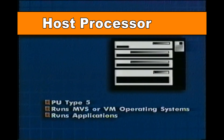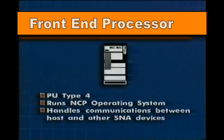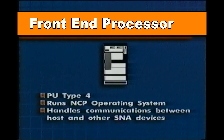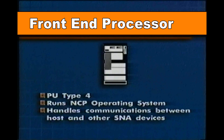Type 5 physical units are the mainframe computers where your applications run — an example would be an ES9000. Type 4 physical units are communication controllers that run their own operating systems and manage all the communications of the host, be it SDLC traffic, X.25 traffic, or 802.2 LAN traffic. A 3745, for example, runs an operating system called NCP.